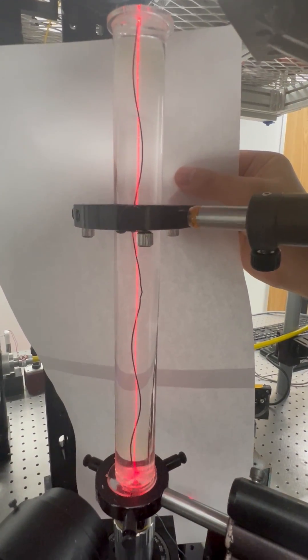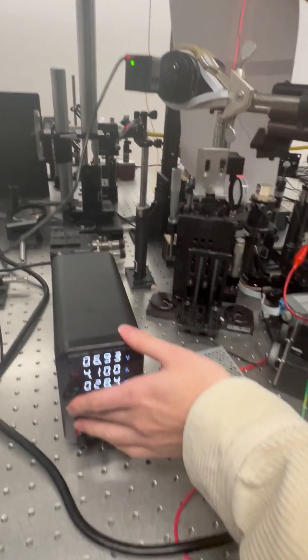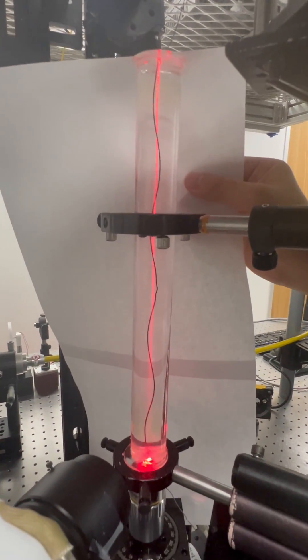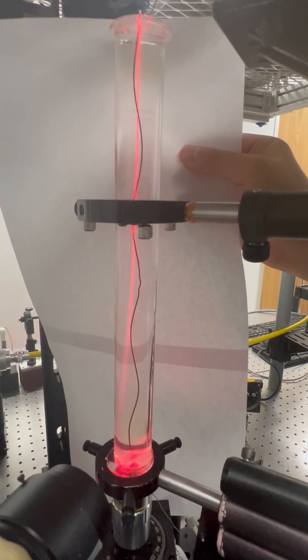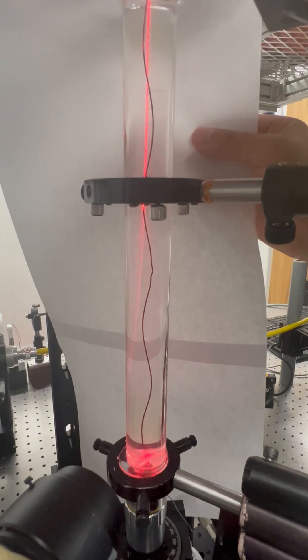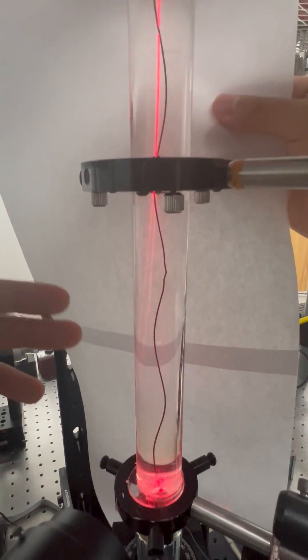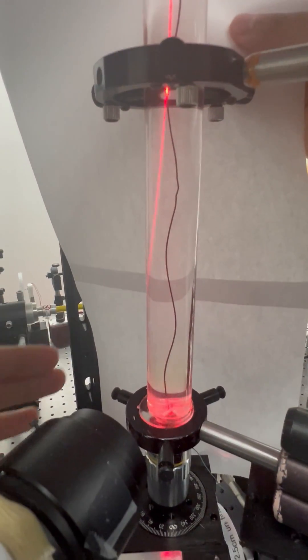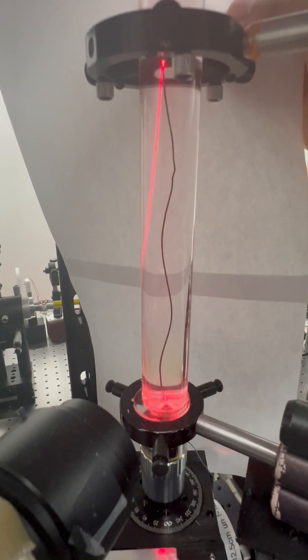Now let's turn off the current source. It takes a few seconds for the temperature distribution and therefore the Lagrange waveguides to vanish. You can see that the beam is diffracting as it reaches the end of the tube because it no longer guides.